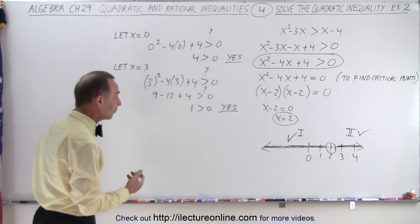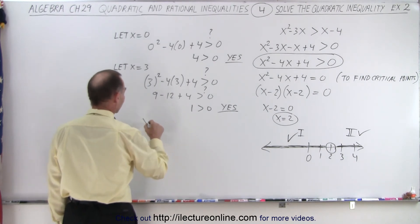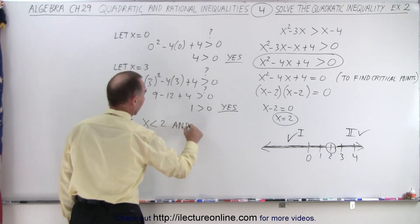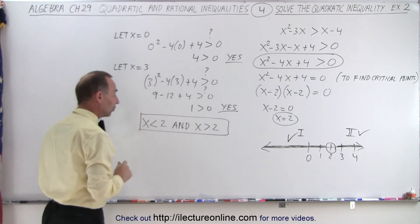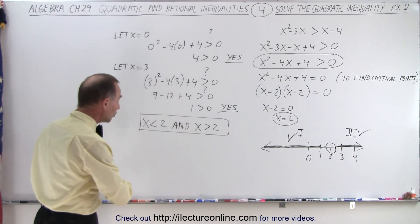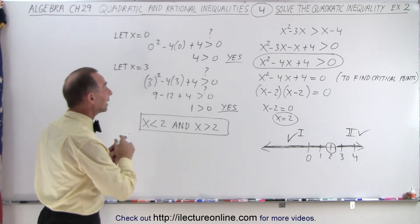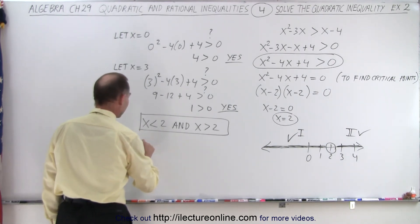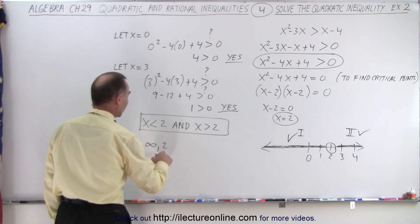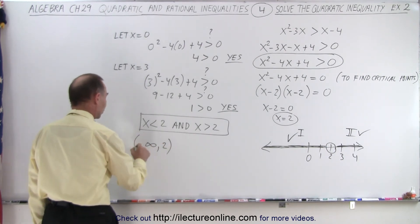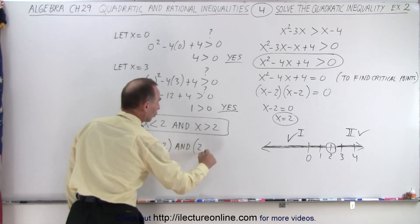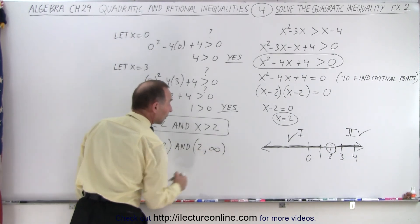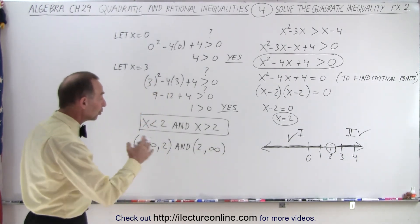So how do we mathematically write that answer? Well, we can say that x is less than 2 and not included, and x is greater than 2. So this would be one way in which we can write the answer. All the values for x that are less than 2 and all the values of x that are greater than 2 but not including 2. We can also write it like this: negative infinity all the way to 2 but not including 2 and not including negative infinity, and 2 all the way to infinity with brackets because infinity nor the number 2 are included.